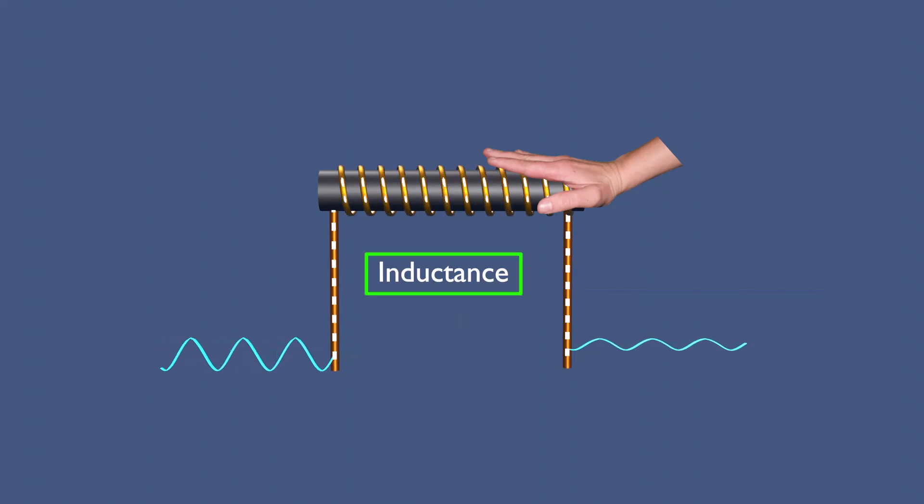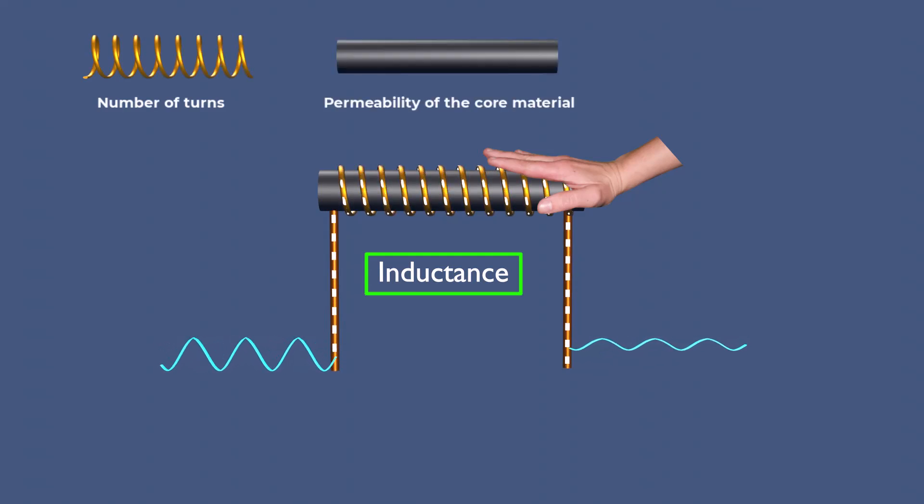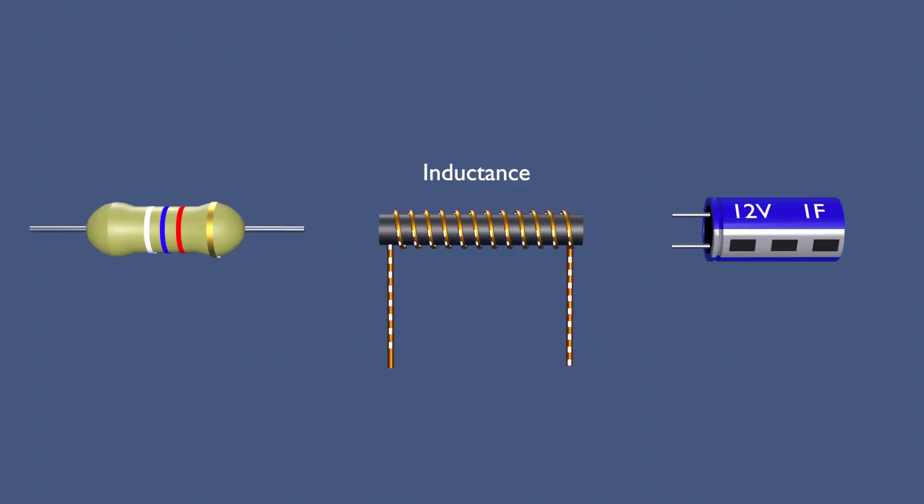The amount of inductance depends on factors like the number of turns in the coil, permeability of the core material, and the coil's geometry. Inductance is a fixed property of the inductor, much like resistance is for resistors and capacitance is for capacitors.